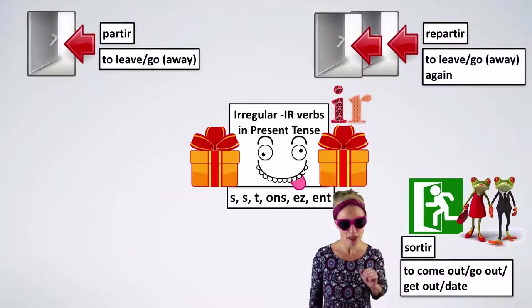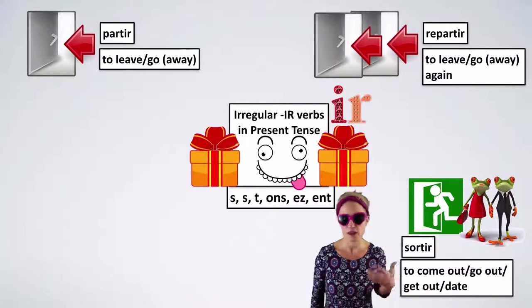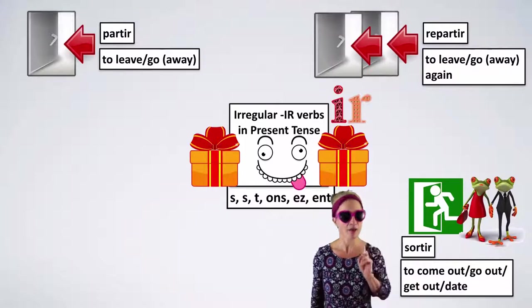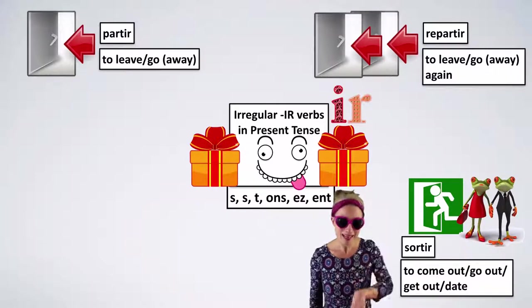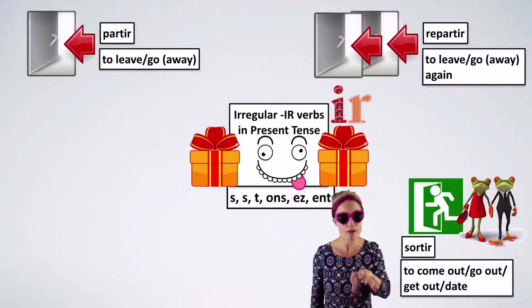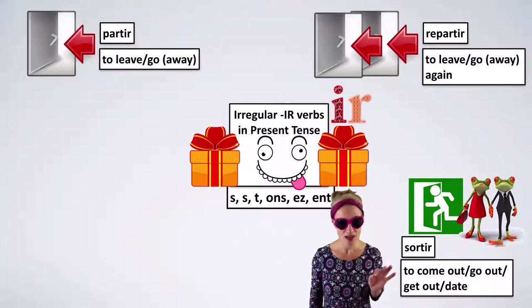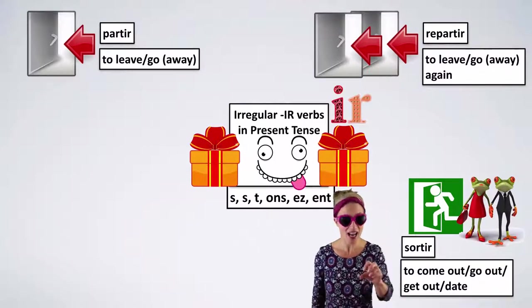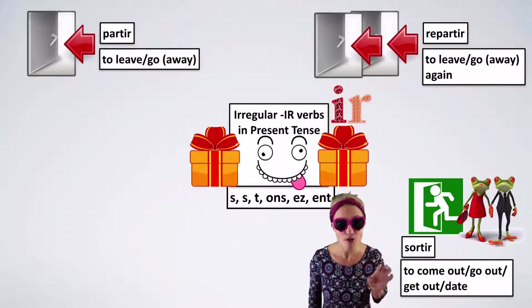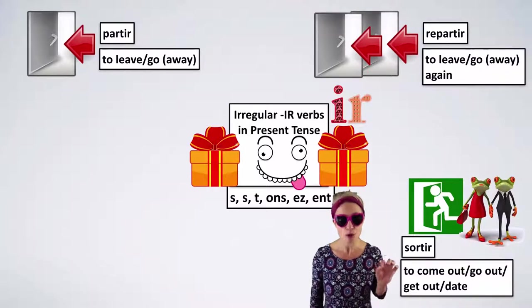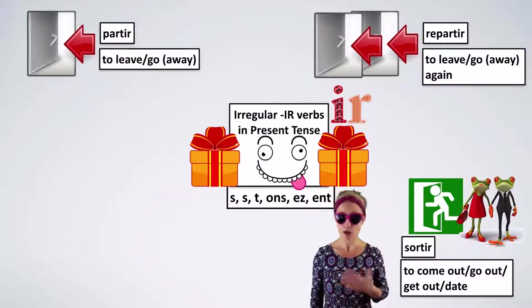Sortir is also a VIP verb. Je suis sortie. Je suis sortie avec Julien — I went out with Julien. However, if you are talking about getting something out, as soon as you have a 'something,' it's not a VIP verb anymore — it now goes with 'avoir.' J'ai sorti mon portable de mon sac à main. But if you're just saying 'I went out' — je suis sortie.